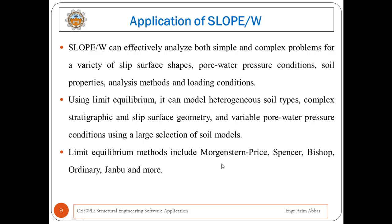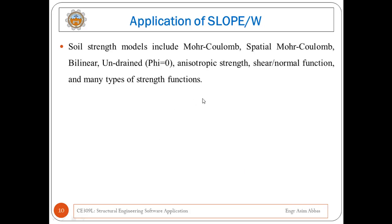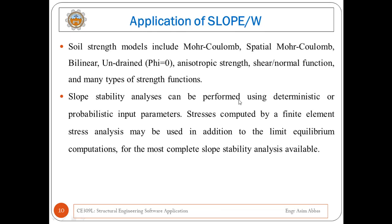The limit equilibrium methods included are Morgenstern-Price, Spencer, Bishop, Ordinary, Janbu, and many more. In Slope W, different soil strength models are available, including Mohr-Coulomb, spatial Mohr-Coulomb, bilinear, undrained, anisotropic strength, shear or normal function, and many other strength functions. Slope stability analysis can be performed using deterministic or probabilistic input parameters. Stresses computed by a finite element stress analysis may also be used in addition to limit equilibrium computations for the most complete slope stability analysis. Slope W is formulated in terms of moment and force equilibrium factor of safety equations.